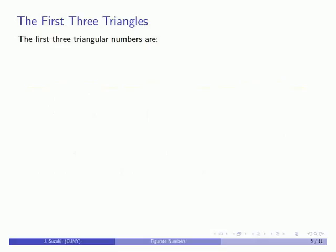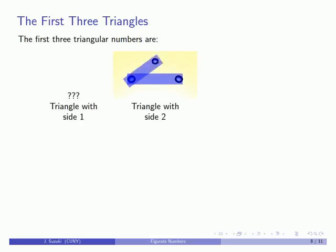So first of all, I might try to form a triangle where each side has one unit along a side. Not entirely sure how to produce that, so maybe we'll wait a moment on that. I'll take a triangle where each side has length two. So here, length two, length two, length two.